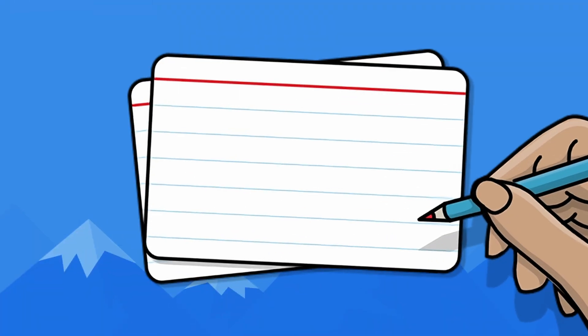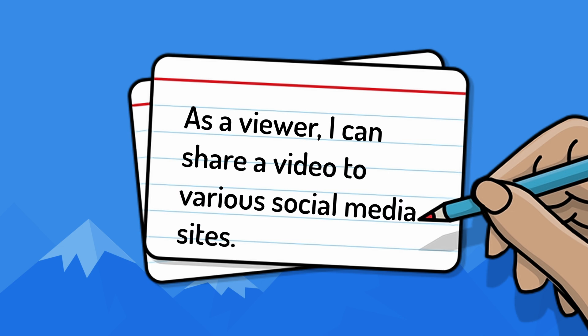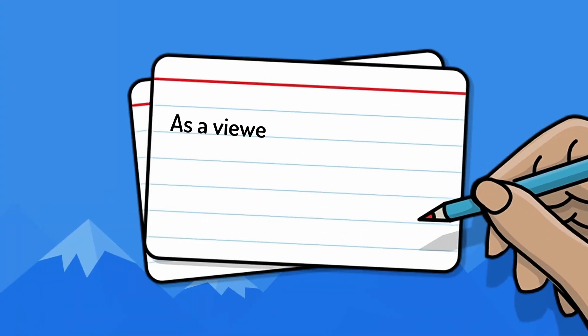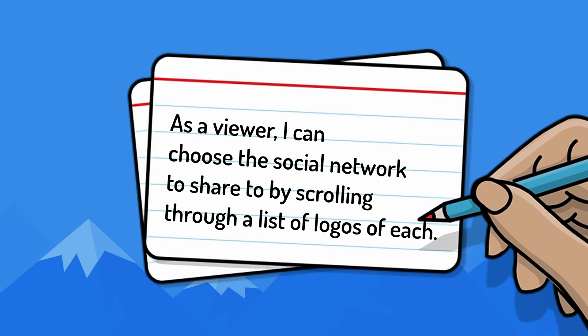A subsequent story could be, 'As a viewer, I can share a video to various social media sites.' This could be done with a very simple user interface at first — no fancy scrolling through a list of logos, maybe just a drop-down list of text with the names of the social sites. The final story could then be, 'As a viewer, I can choose the social network to share to by scrolling through a list showing the logos of each.' Splitting by interface works because the ultimately desired feature can be developed by starting with a simple interface that is successively improved.